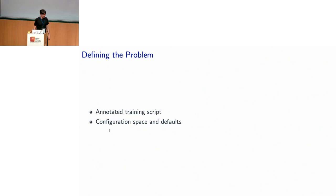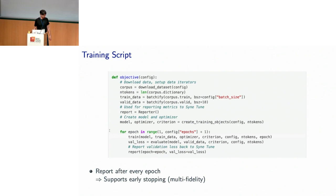How do we define a problem to solve with HPO? There are two things: you take the training script for the model you're interested in tuning, annotate it a little bit, and then you also need to define the search space — the configuration space. This is how a training script is annotated in SyneTune. It's a streamlined objective for our transformer training problem. It depends on the hyperparameter configuration — a dictionary. You download the data, split into training and validation sets, set up iterators — all potentially depending on the hyperparameter configuration, for example the training iterator depends on batch size.